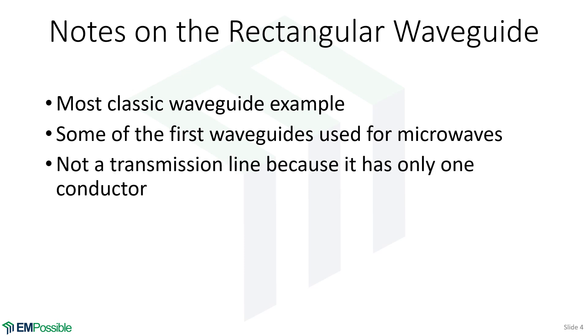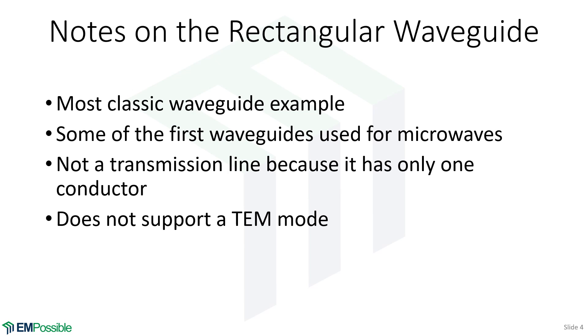It's not a transmission line, and that's because it only has one conductor. This means it will not support a TEM mode, so we're not going to bother to try to analyze that for the rectangular waveguide. The TEM mode does not have a low frequency cutoff, whereas TE and TM modes do. That means there's a certain frequency below which this rectangular waveguide is completely useless—it does not support any guided modes.